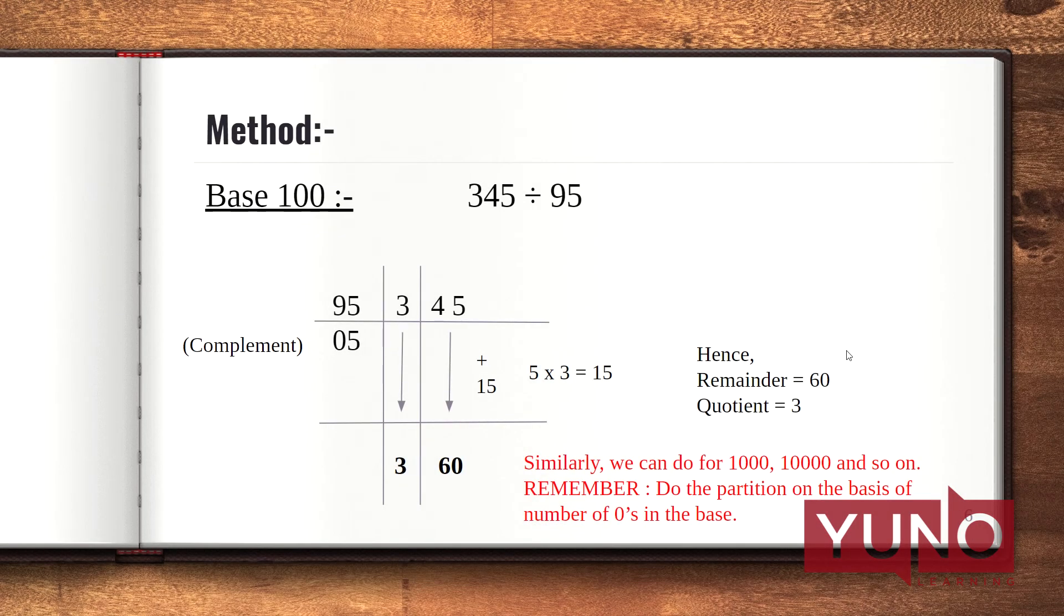Now let's see a last example where I have 100 as a base. Here, the thing that is different is I have two zeros in my base. Now I will divide the digits of the dividend into two parts. Like 4 and 5 will be one part and 3 is another part. Copying down the leftmost dividend digit as it is and writing the complement of 95, which is 5, I have 3 multiplied by 5, which is 15, added with 45, that is 60. Hence, 60 is my remainder and 3 is my quotient.